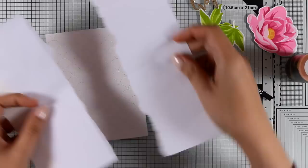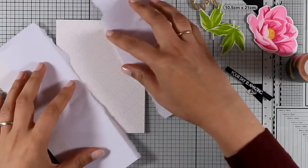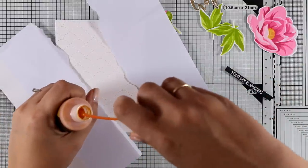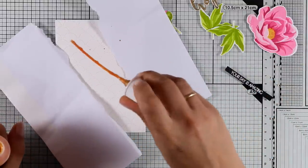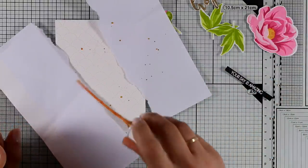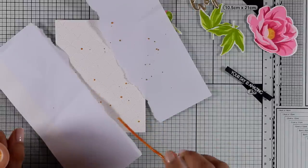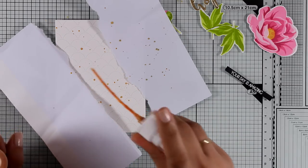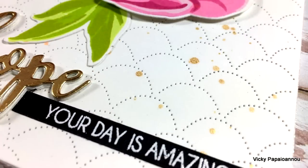I'm using the golden spray that came out by Altenew in the previous release. Instead of spraying though I'm just going to add a few splashes. And you can see that I have covered up a part of that panel just because I don't want to have splashes all over the place. When this dries it's going to give a beautiful golden finish. And you can see here a photo.